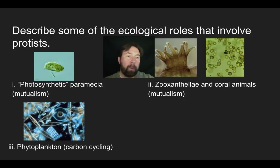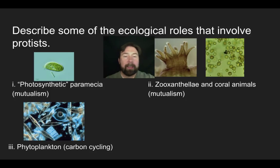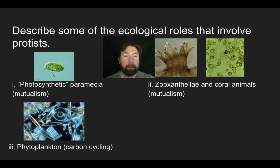When we look at phytoplankton, this is your traditional producer. But in addition to being a traditional producer, it's also heavily involved with the carbon cycle because it takes carbon out of the atmosphere and fixes it into carbohydrates. This is how most carbon enters the food chain — through the photosynthetic action of phytoplankton and other producers.